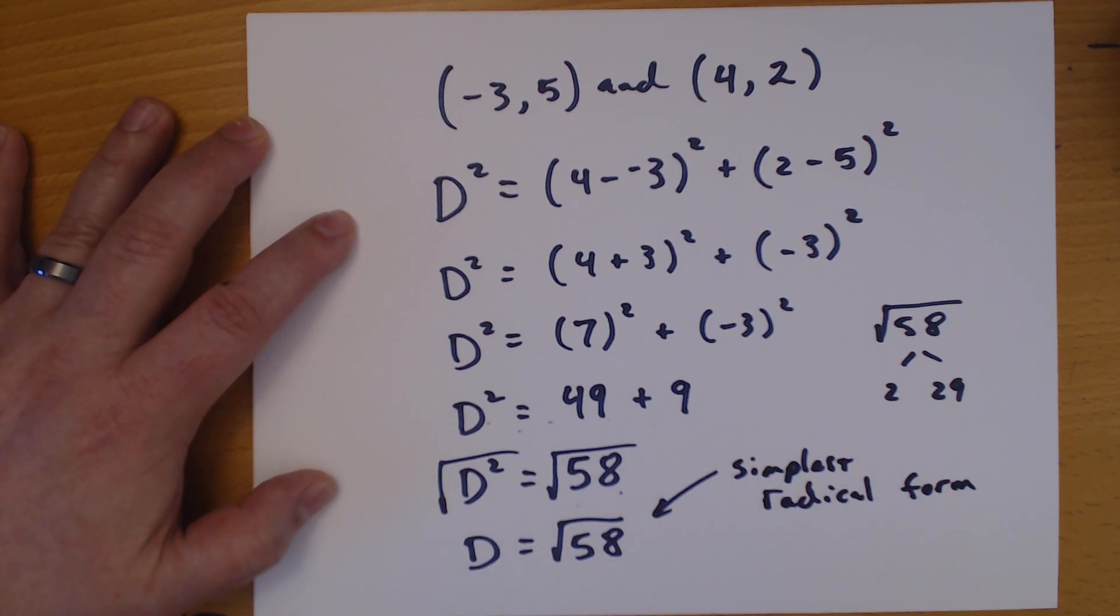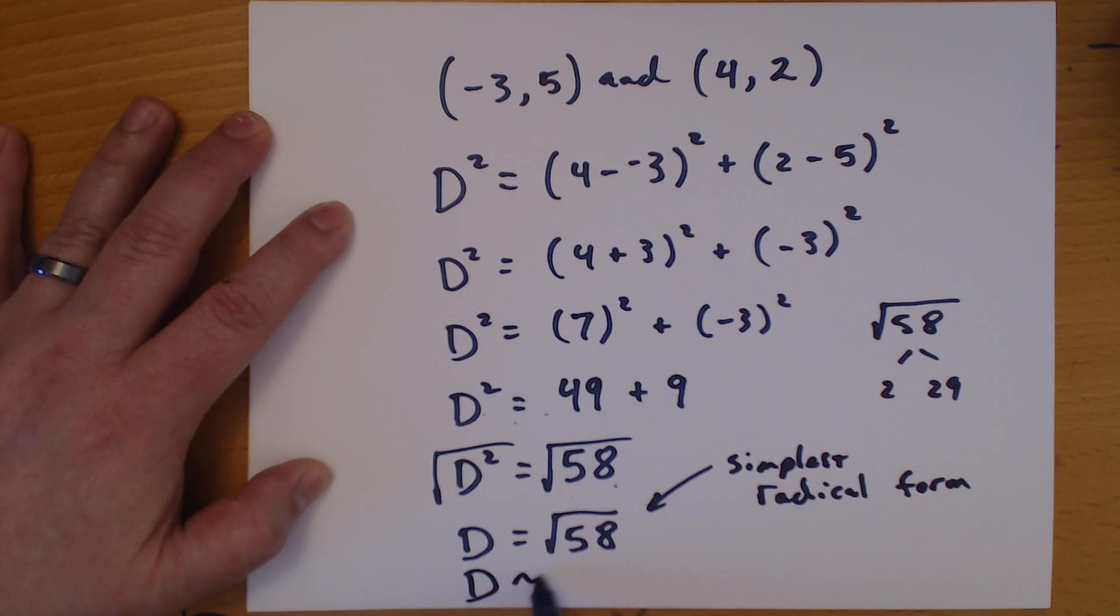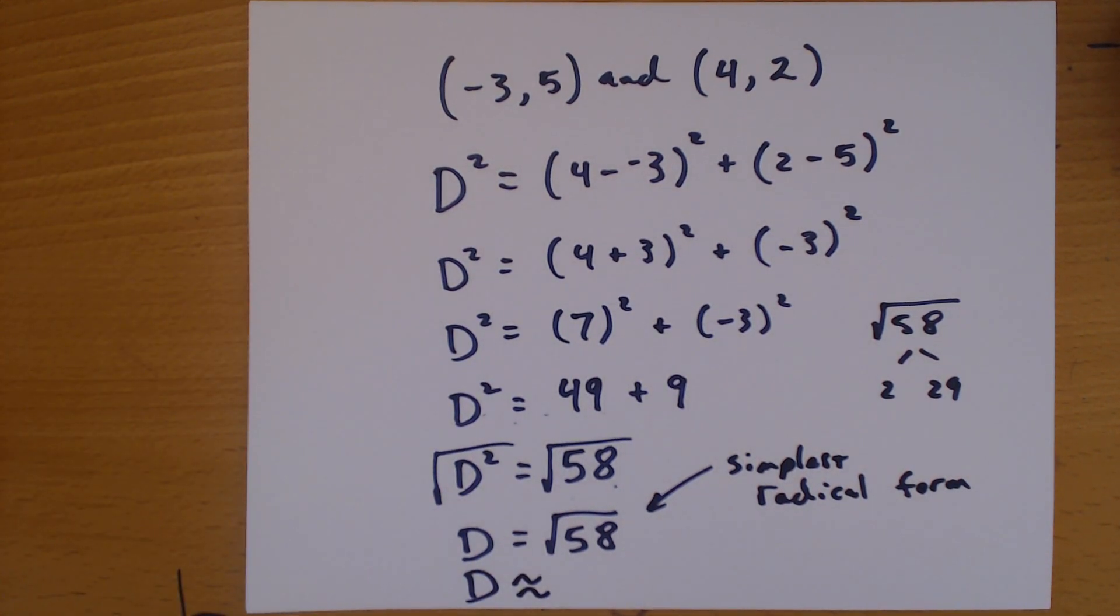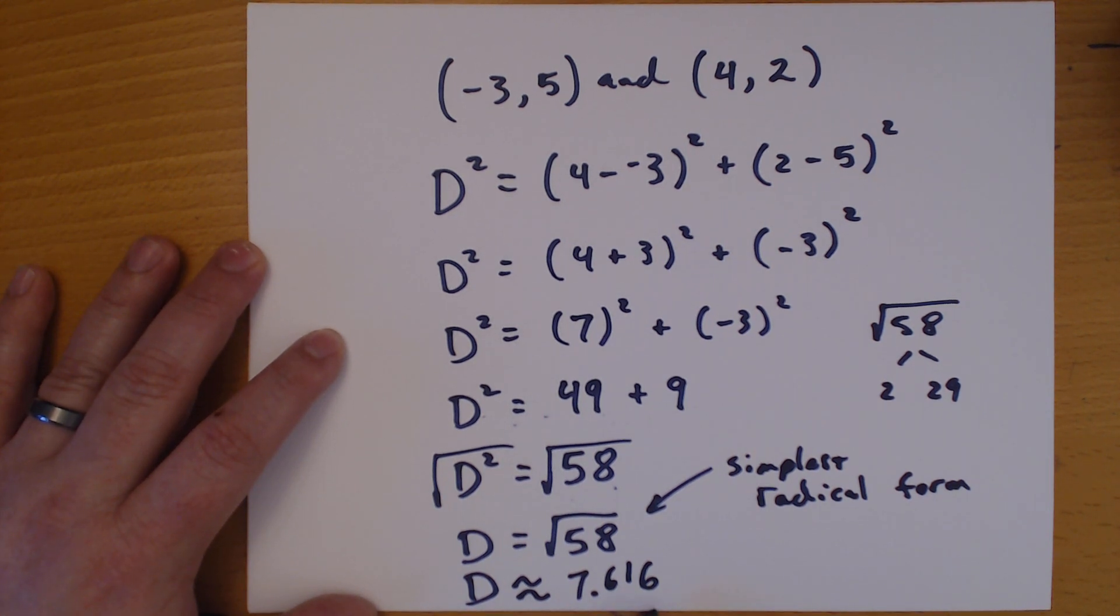However, if they want you to give your answer as a decimal, you have to say approximately. Because remember, you're going to have to round now. And you can use your phone or another calculator. And your answer will be approximately 7.616. And depending upon the number of decimal places that they want you to round, that will tell you how far out to leave your answer.